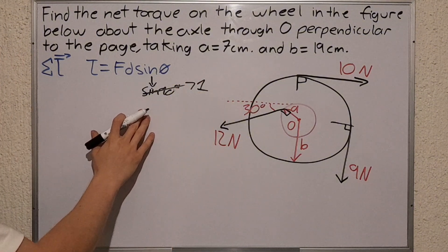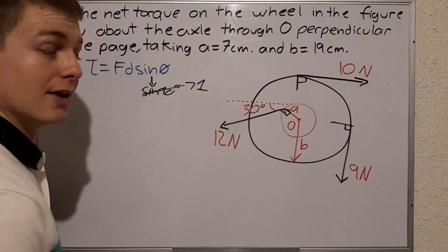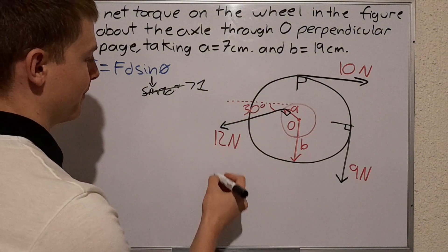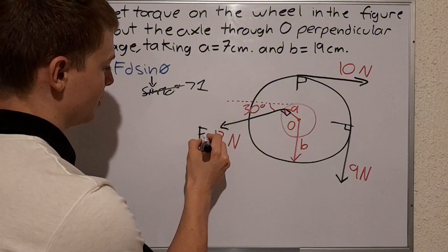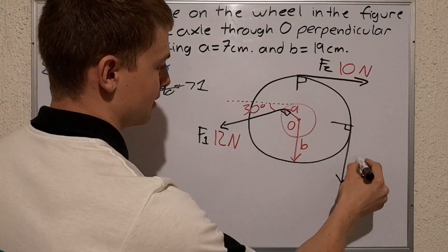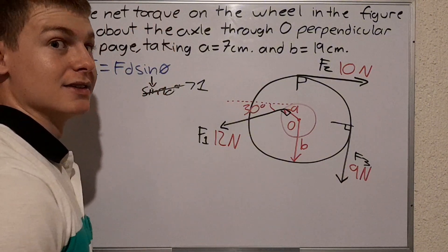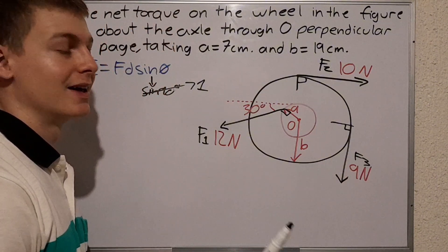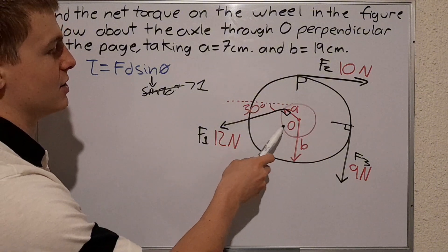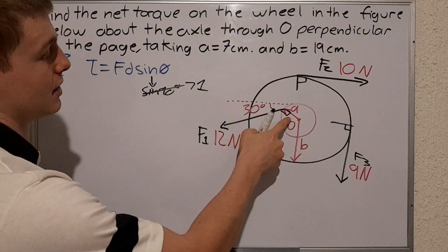Then we're gonna put this as the sine of 90 degrees, which is just one, so we're not gonna worry about the angle. So then we have one, two, and three forces we're gonna name them. This is gonna be force 1, this will be force 2, and this is force 3. Each of them have a distance at which they are applied.